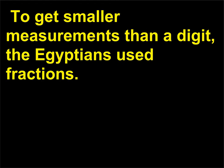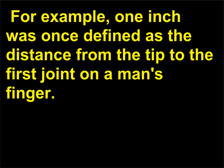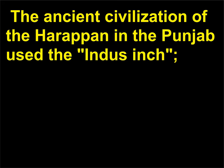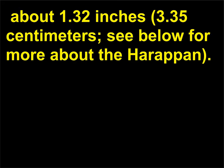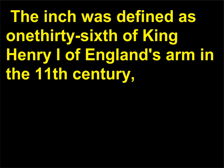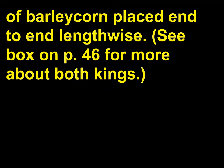To get smaller measurements than a digit, the Egyptians used fractions. Over time, the measurement of an inch was all over the measurement map. For example, 1 inch was once defined as the distance from the tip to the first joint on a man's finger. The ancient civilization of the Harappan in the Punjab used the Indus inch. Based on ruler markings found at excavation sites, it measured, in modern terms, about 1.32 inches, or 3.35 centimeters. The inch was defined as 1/36 of King Henry I of England's arm in the 11th century. And by the 14th century, King Edward II of England ruled that 1 inch equaled 3 grains of barleycorn placed end to end lengthwise.